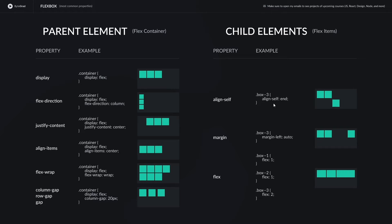Now let's look at properties we can use on the flex items themselves. If we have three flex items sitting on a row and we want just the third one to align to the end vertically, we can't use `align-items` because that applies to all of them. Instead, we select the specific flex item and use `align-self`, setting it to `end` — this moves only that item to the bottom without affecting the others.